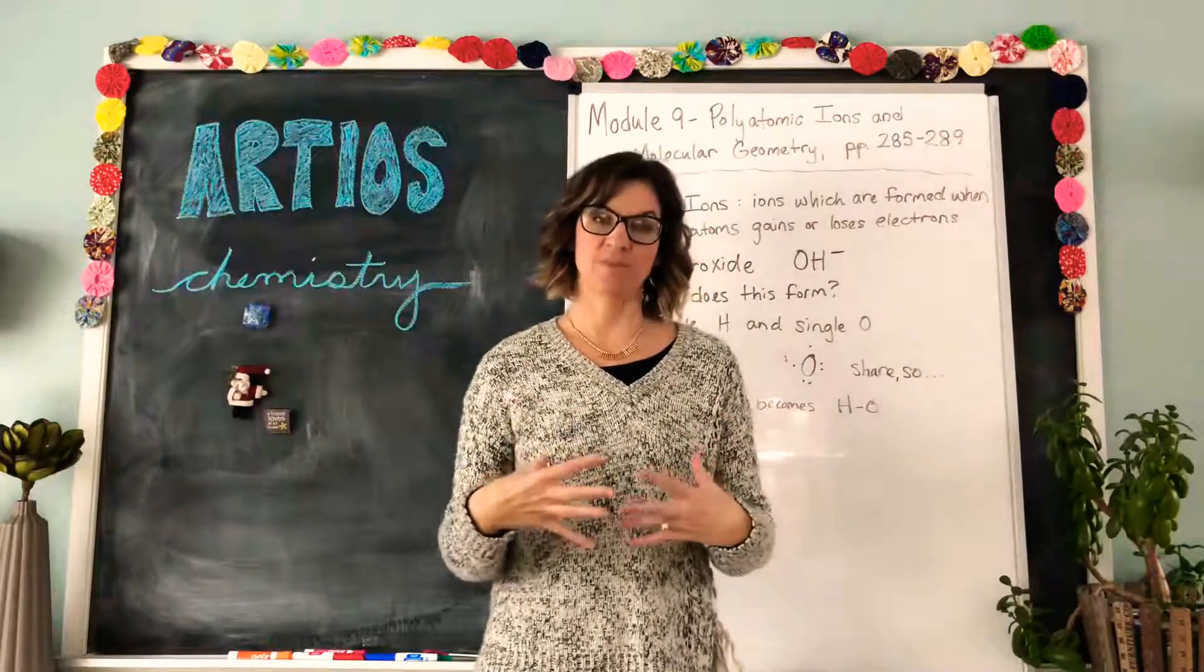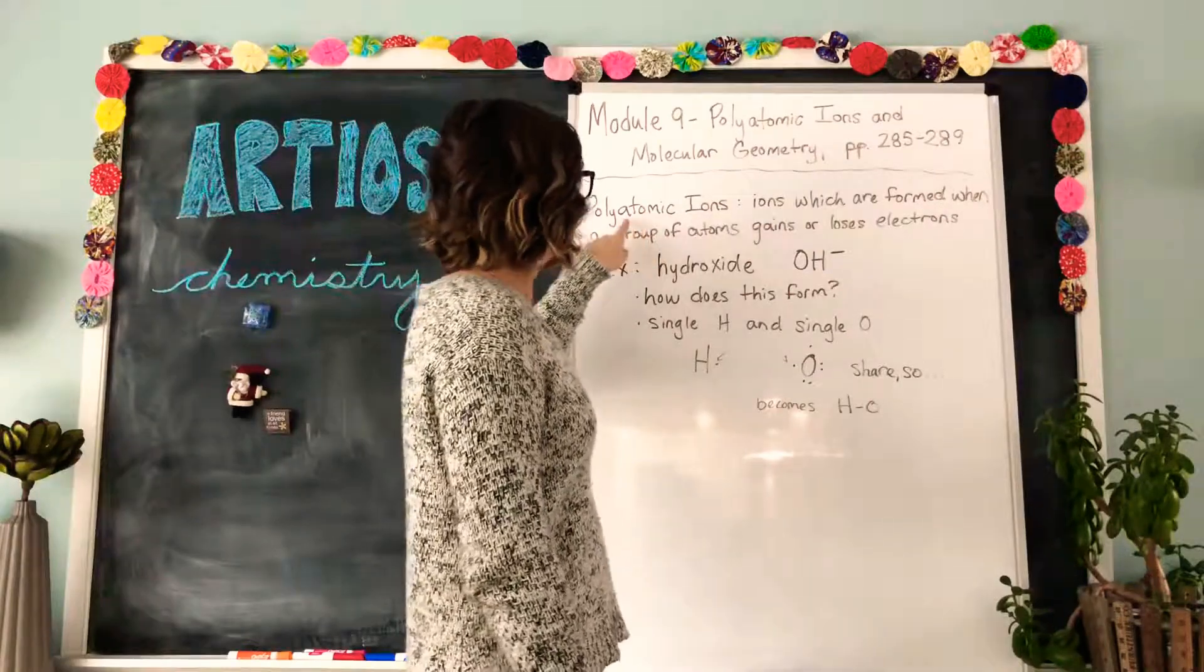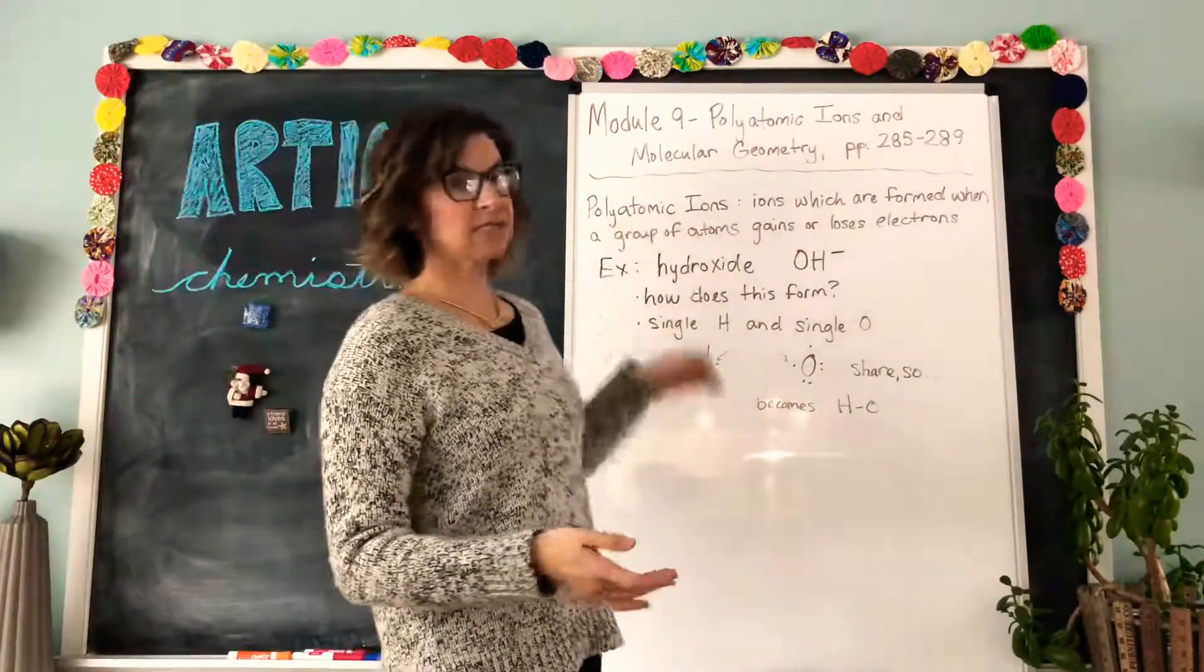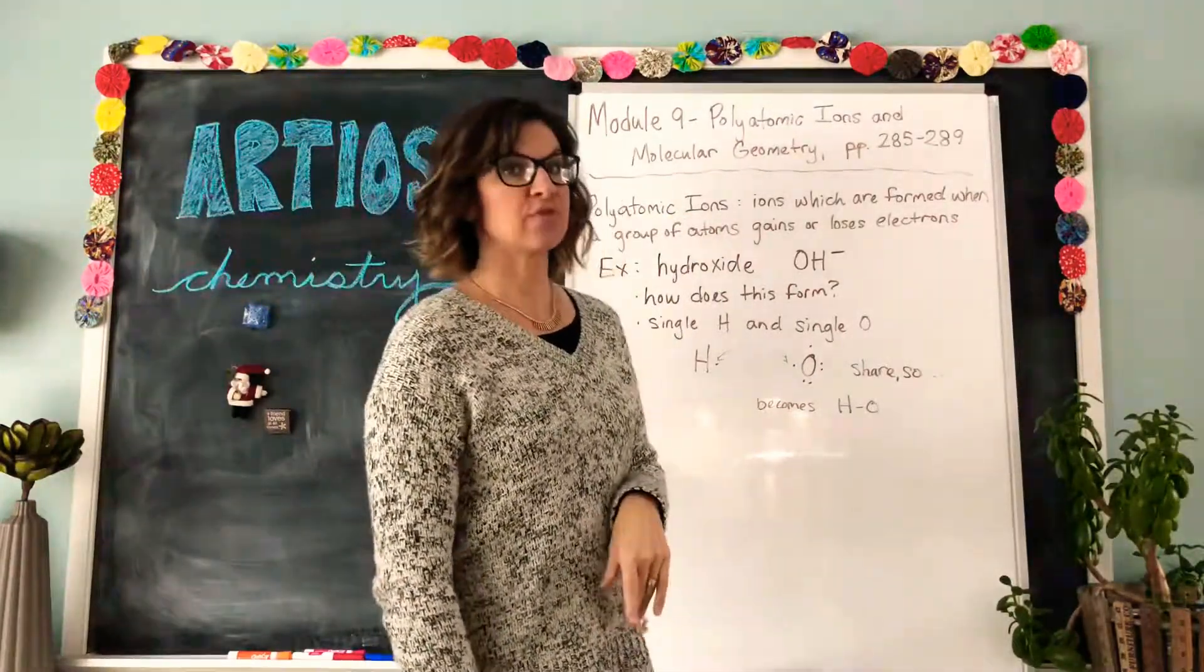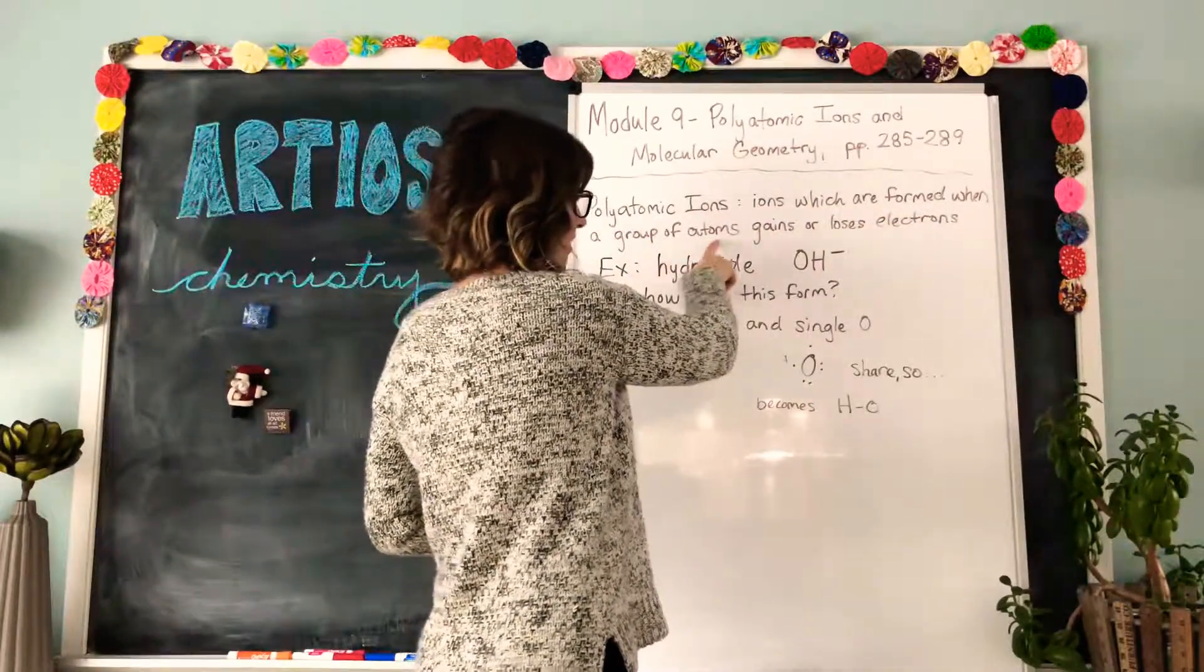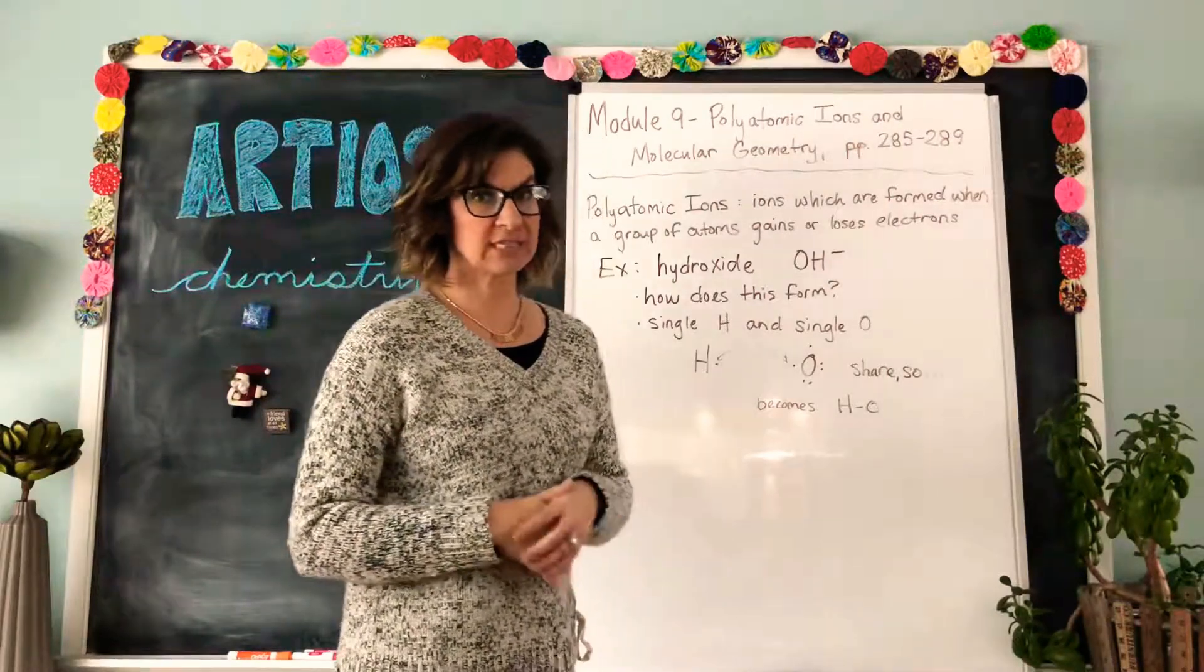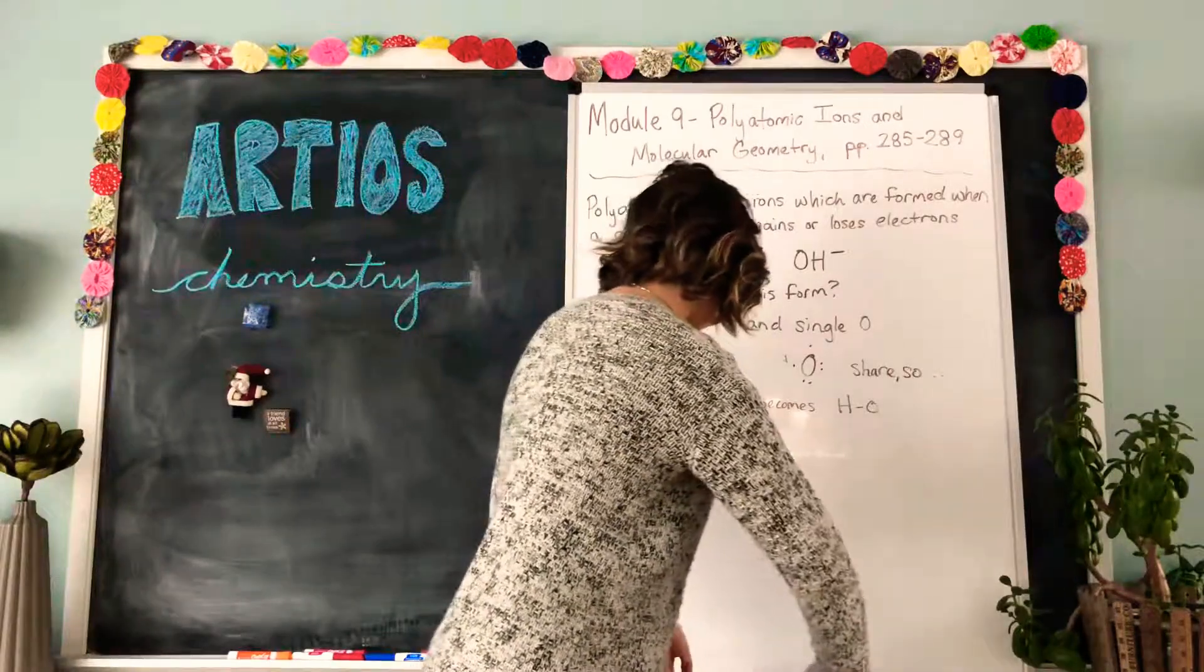In this module we are going to learn about the shape of molecules, so groups of atoms. To get us started we need to learn a new term: polyatomic ions. As you can tell from the name, poly means many or more than one, and atomic. So we're talking about more than one atom and they join together to form an ion. The definition is ions which are formed when a group of atoms gains or loses electrons.